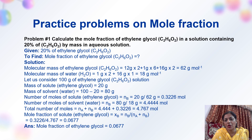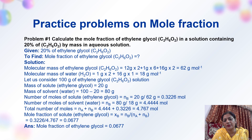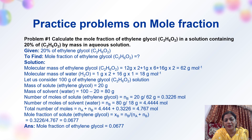Practice problem on mole fraction: Calculate the mole fraction of ethylene glycol in a solution containing 20% of ethylene glycol by mass in aqueous solution. Aqueous means the solvent is water. The molecular mass of ethylene glycol is 62 and of water is 18. Considering 100 grams of solution, the mass of solute is 20 grams and solvent is 80 grams. Putting values in the formula, chi-B comes out to be 0.0677 — a unitless quantity.